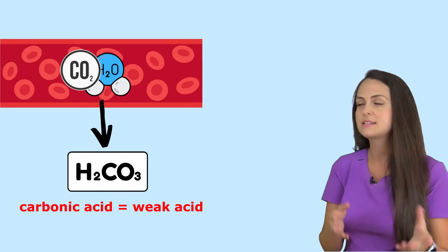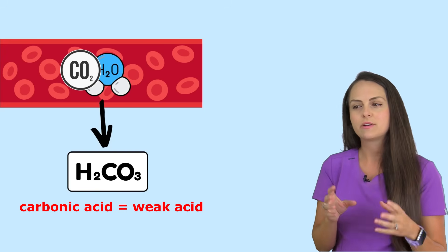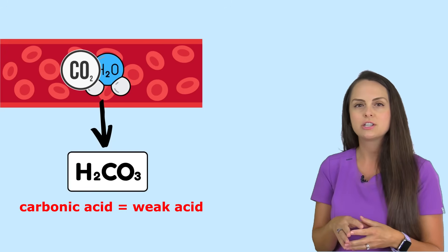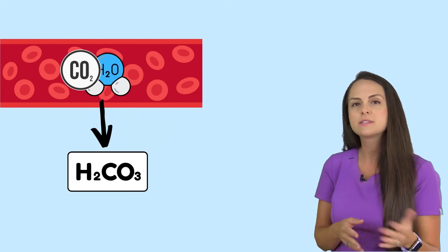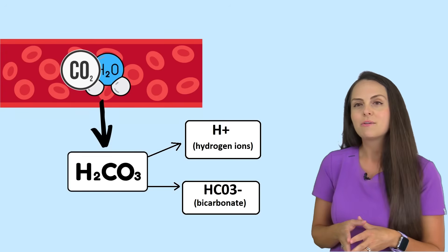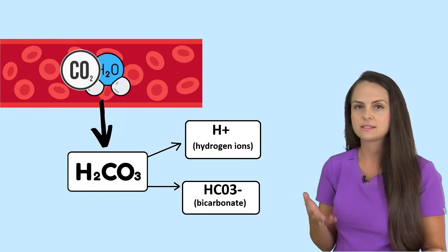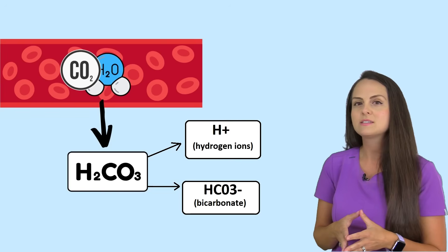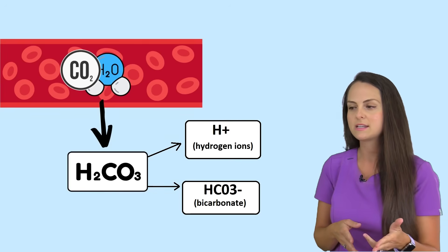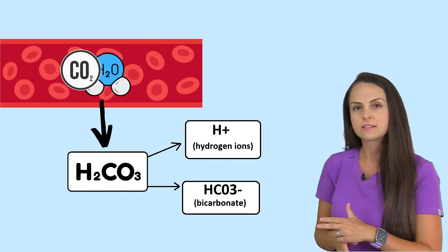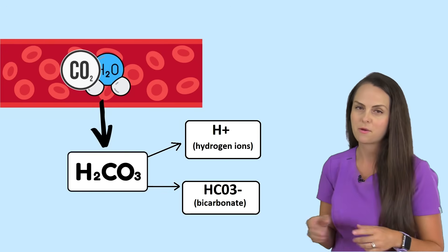When carbon dioxide binds with water, you get the formation of carbonic acid — remember carbonic acid. Carbonic acid is a weak acid, and because it's weak, whenever it forms it just breaks apart. When it breaks apart it forms hydrogen ions and bicarb. Hydrogen ions are really important in maintaining our acid-base balance, because without CO2 and water binding to form carbonic acid, we will affect our hydrogen ions.